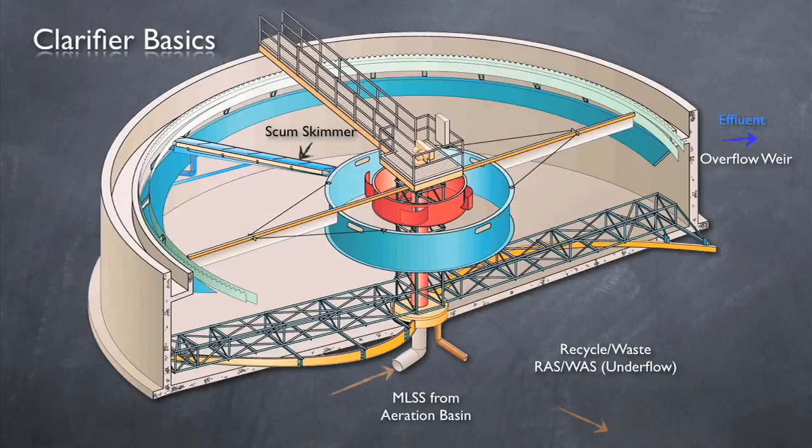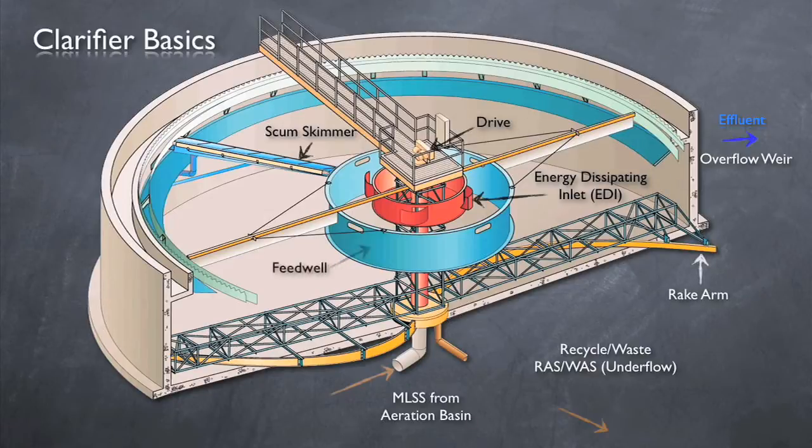Without going into too much detail, some other important components of a circular clarifier include the rake arms, an energy dissipating inlet, the drive mechanism, a feed well, and a density current baffle.